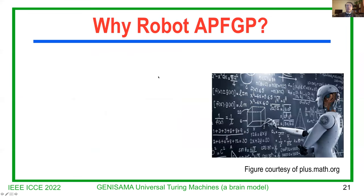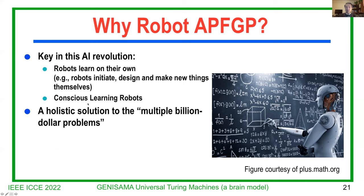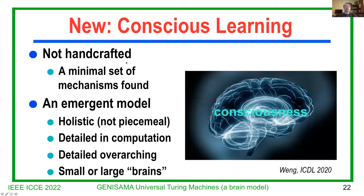Why must robots do APFGP? The key is that the robot must learn on its own. You cannot just spoon-feed data into a robot. For example, a robot should initiate design and make new things by itself, like a human. And the robot must be conscious during learning. It's like a recurrence — you need a little consciousness to learn the next piece of knowledge, and the way you learn that knowledge also helps the next cycle. So consciousness and learning depend on each other. So the new concept in this tutorial is called conscious learning, published in ICDL 2020.